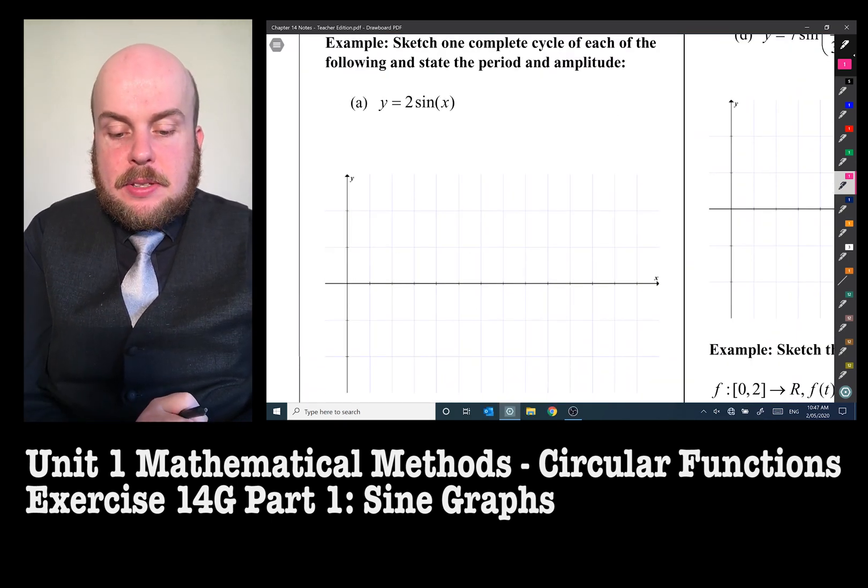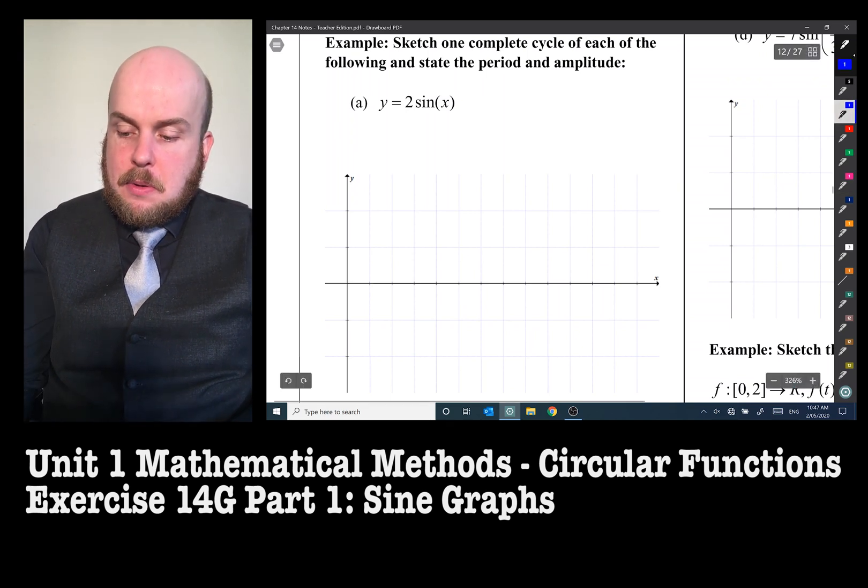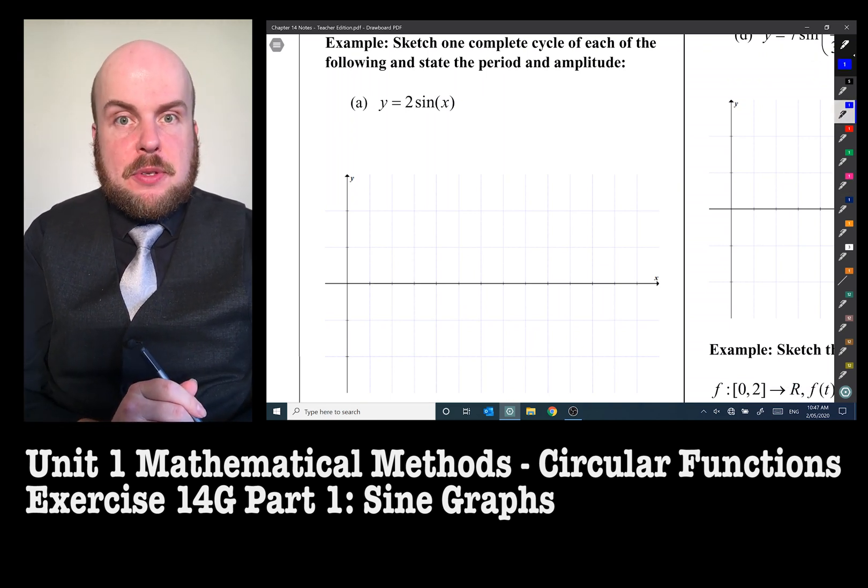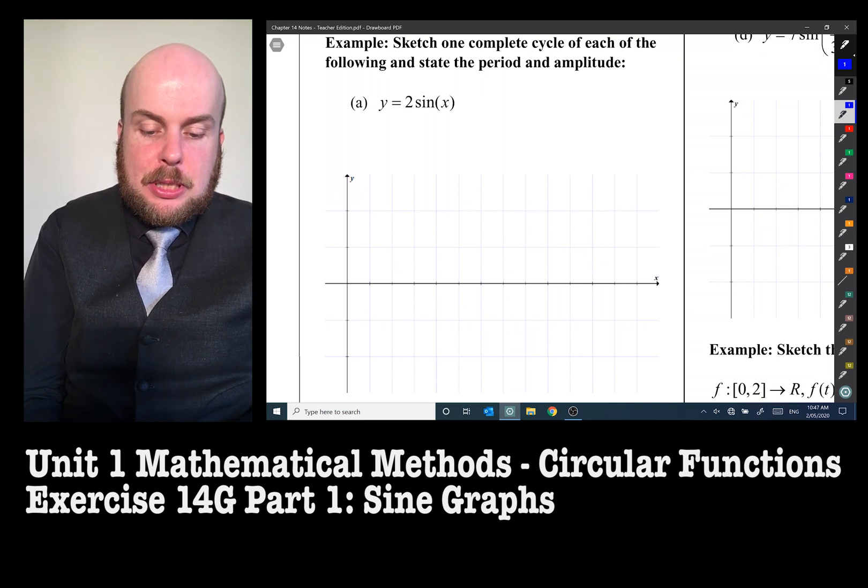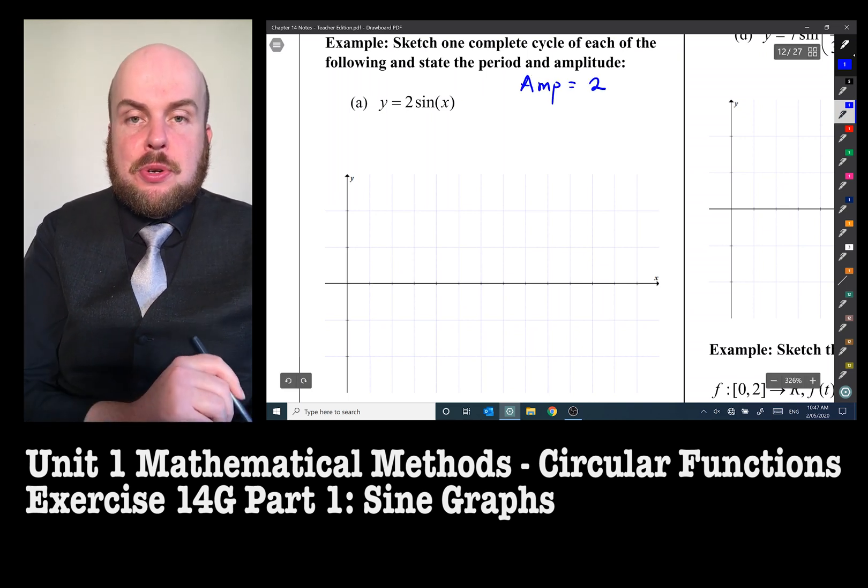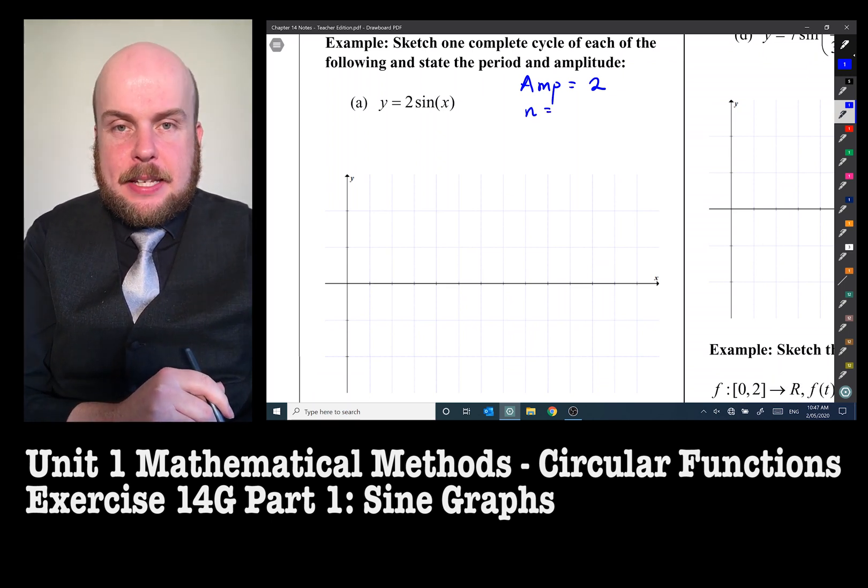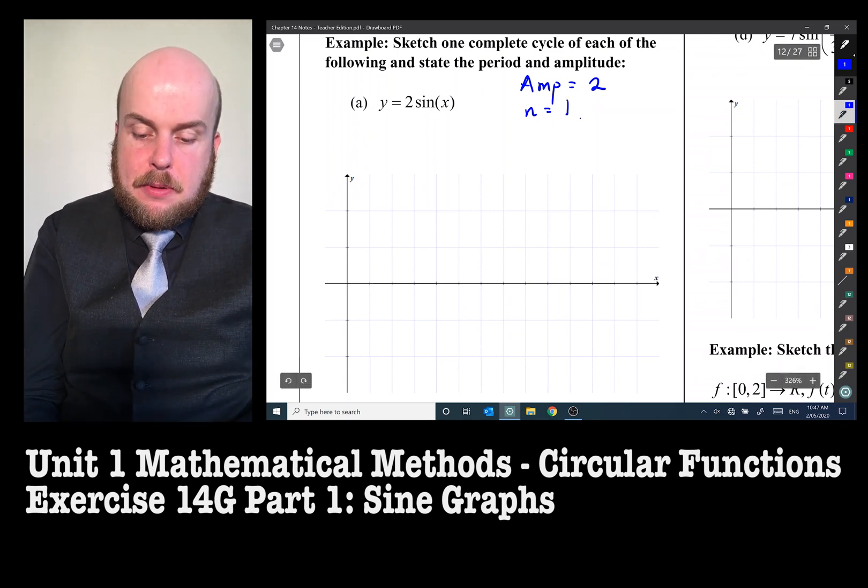Example, sketch one complete cycle of the following and state the period and amplitude. Well, the period and amplitude is probably the first thing I would do. There's a big old two at the front there, so the amplitude is going to be two. There is no number next to the x inside the brackets, so n will be equal to one. So therefore, the period will be two pi divided by one, which is two pi.